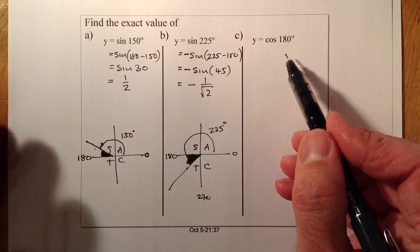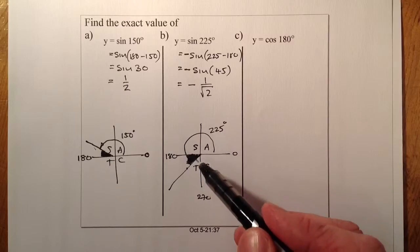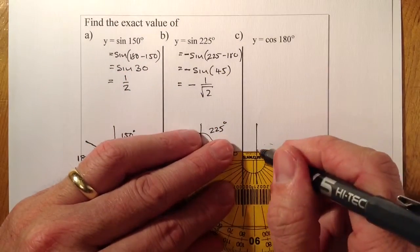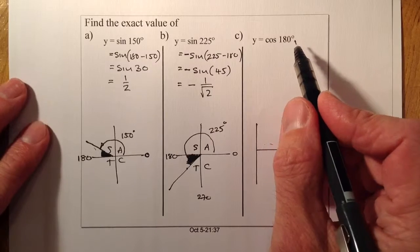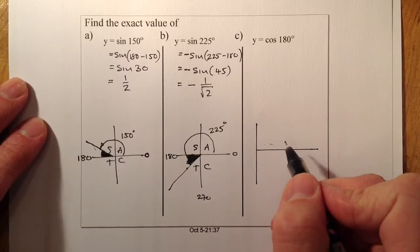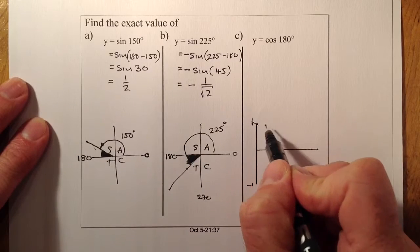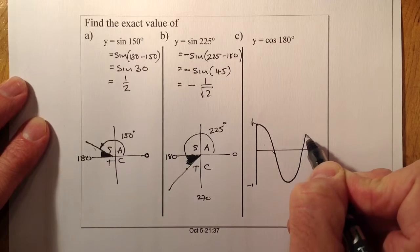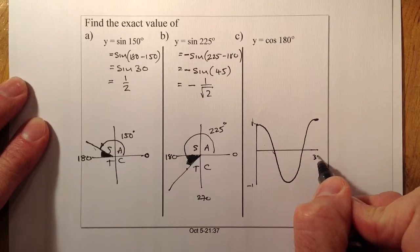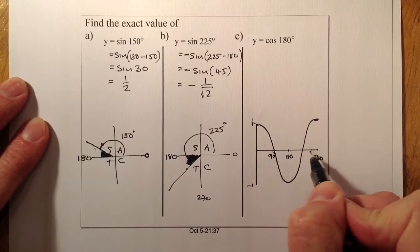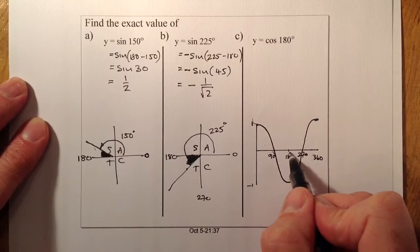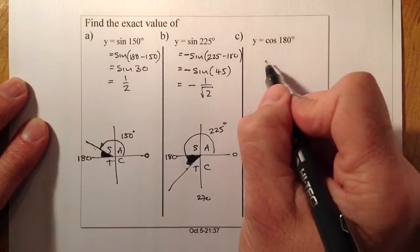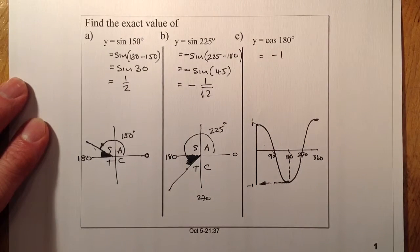For a value like cosine 180 — a multiple of 90 or 360 — I'd look directly at the curve rather than the CAST diagram. The cosine curve starts at 1, goes down through 90, bottoms at minus 1, and comes back up to finish at 360 degrees. Reading off at 180 degrees, the value is simply minus 1.